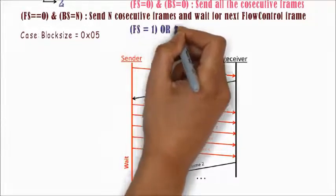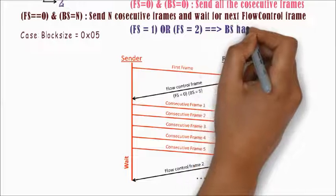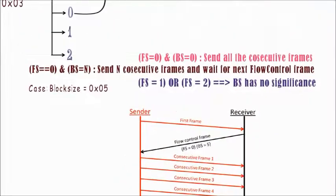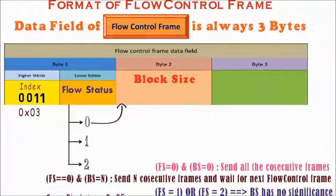Note that when flow status is non-zero, then the block size has no significance. Next, comes the last field, which is the third byte of flow control frame, which is STMIN.